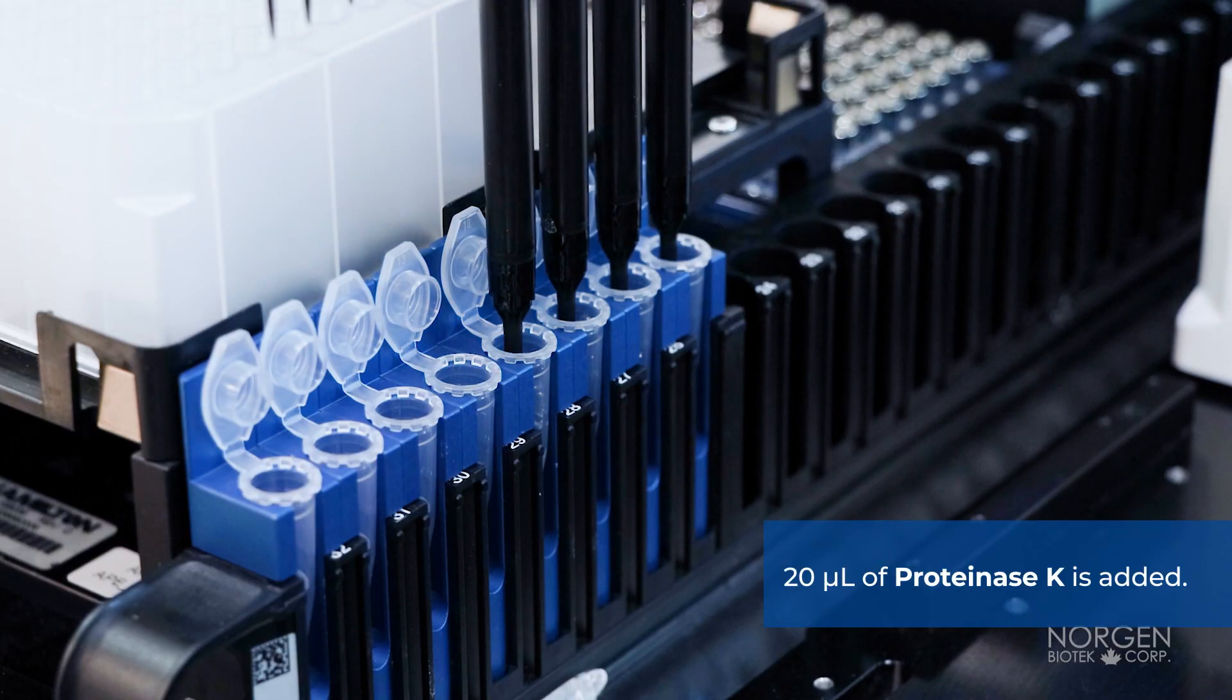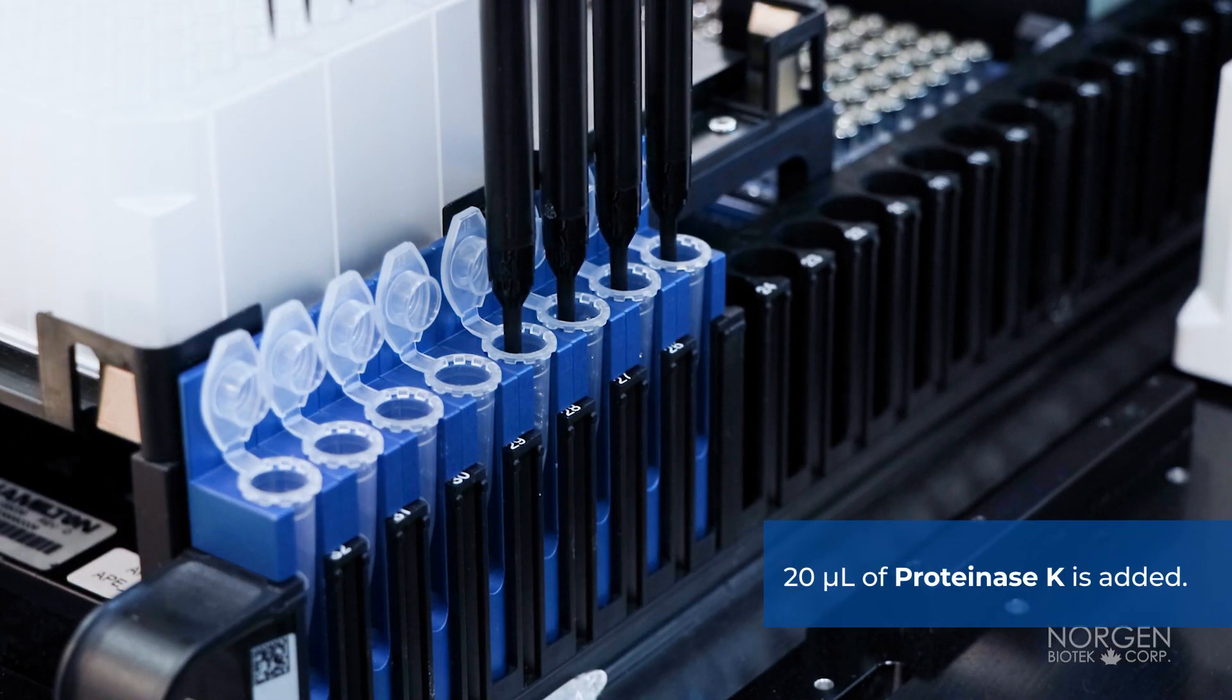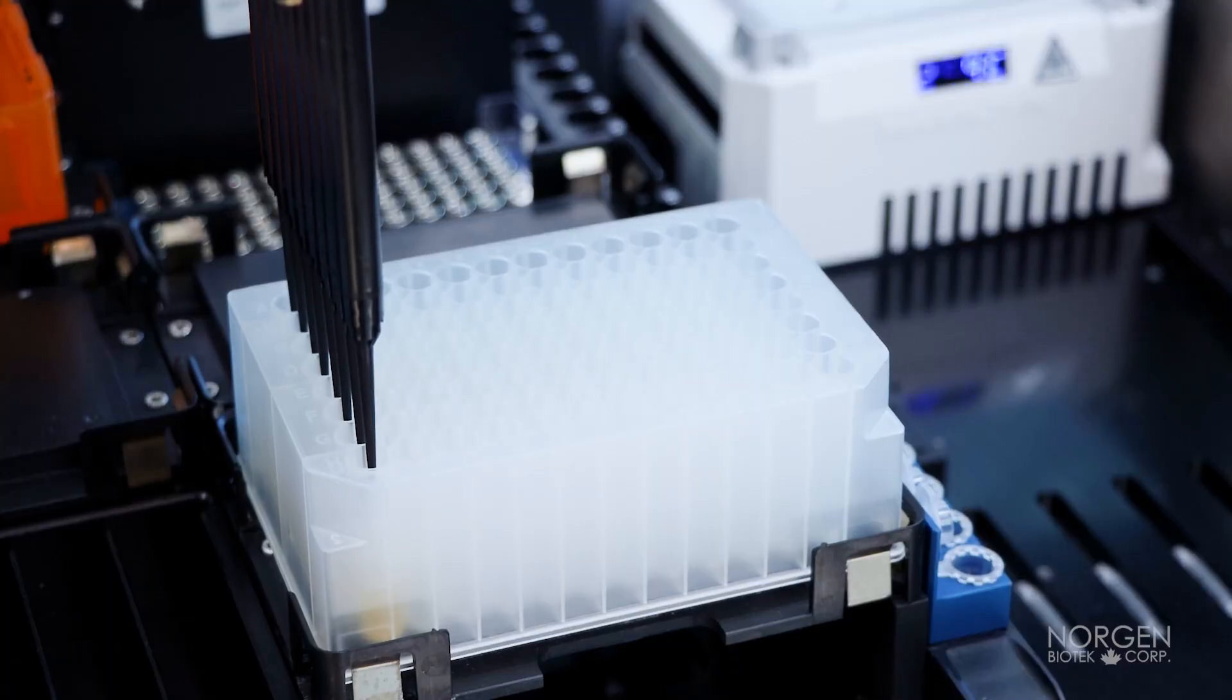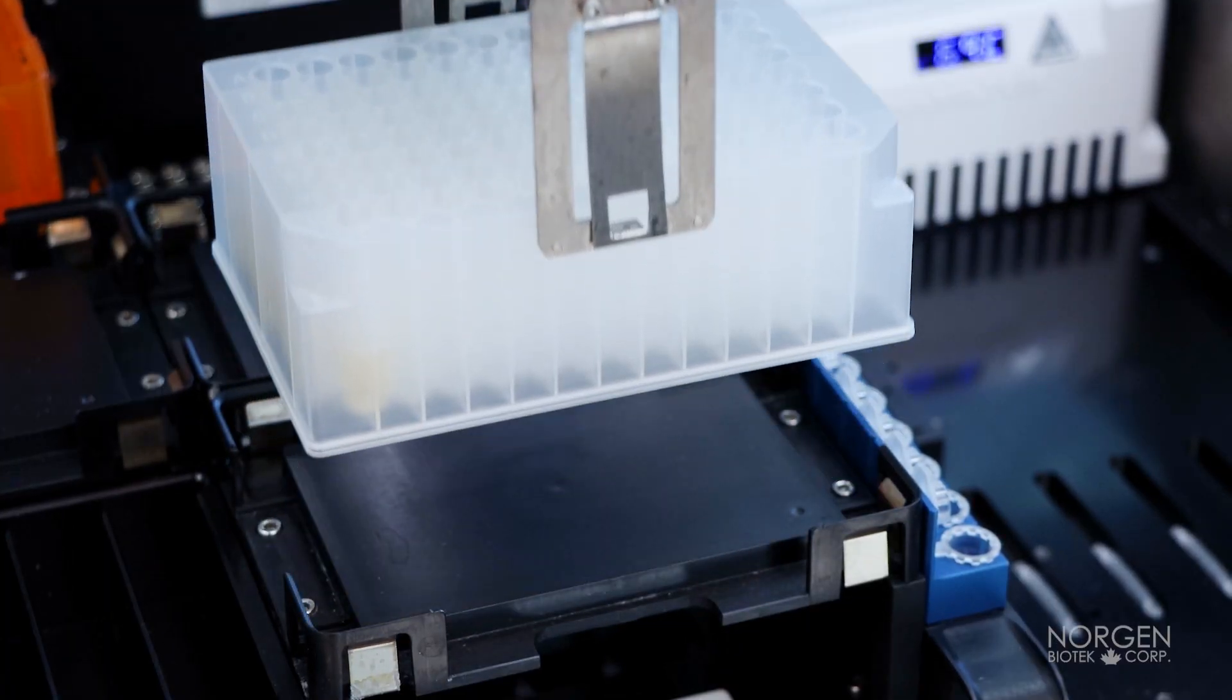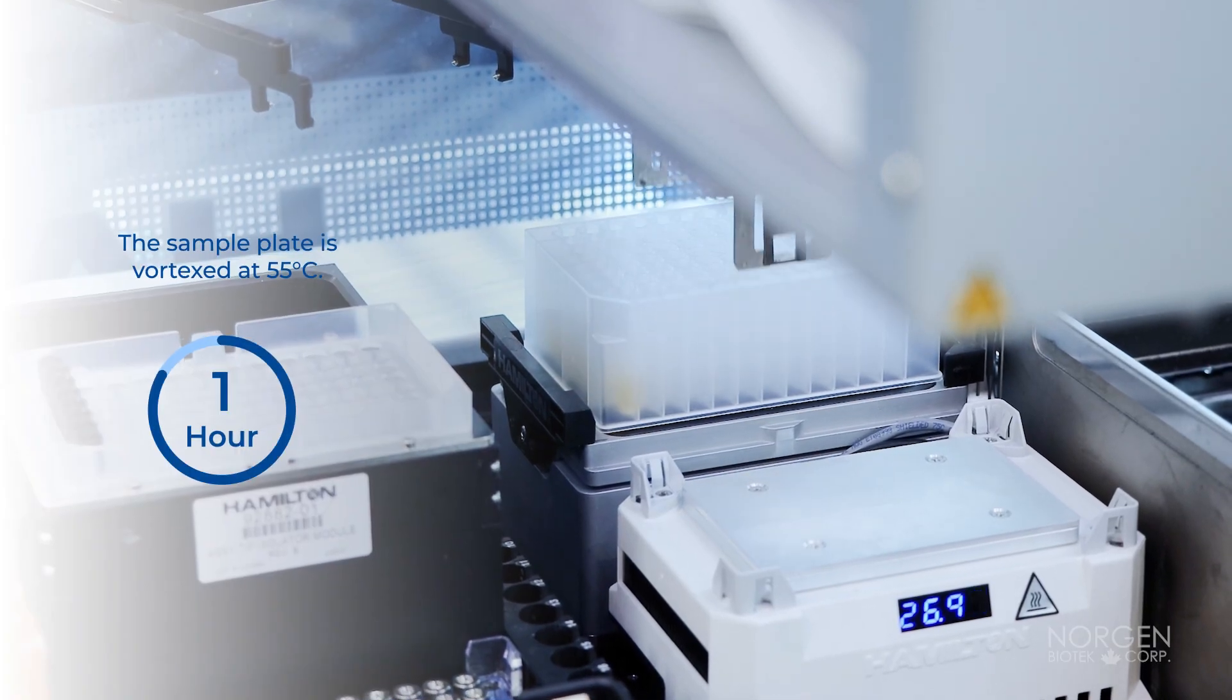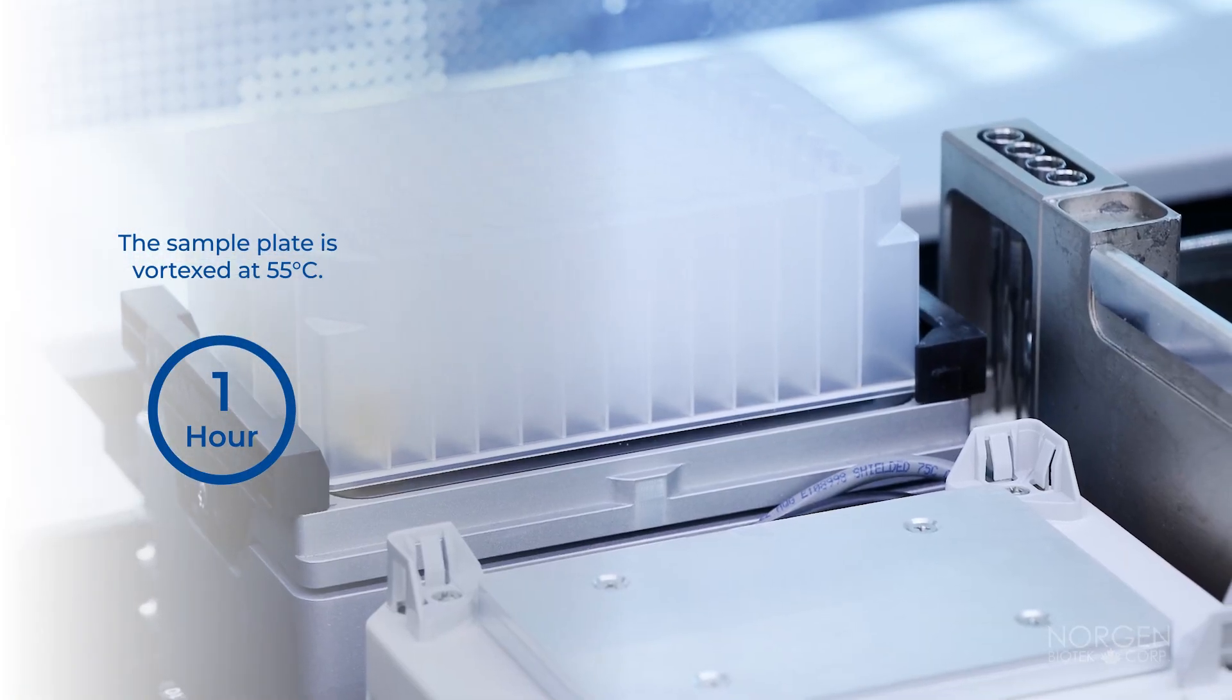Then 20 microliters of Proteinase K is added. The sample plate is transferred to the heater shaker and vortexed at 55 degrees Celsius for one hour.